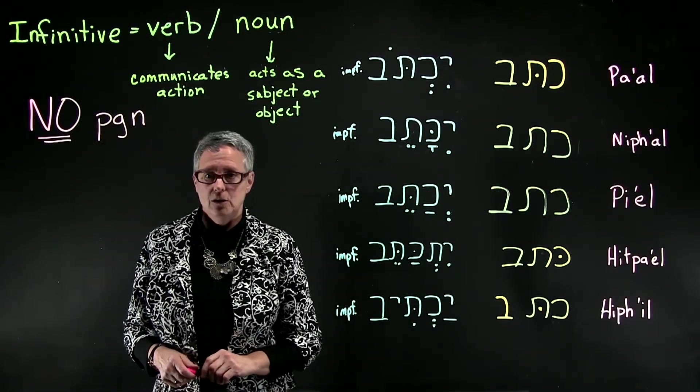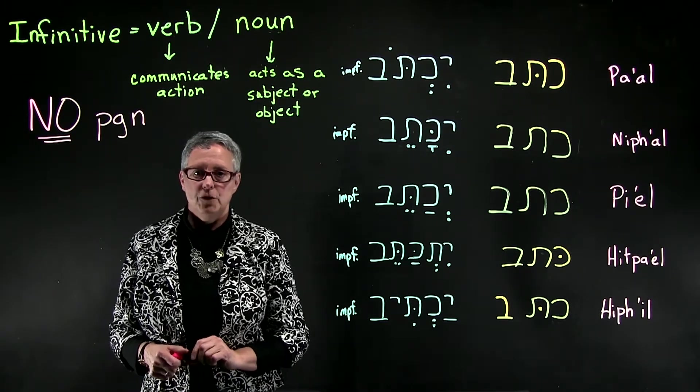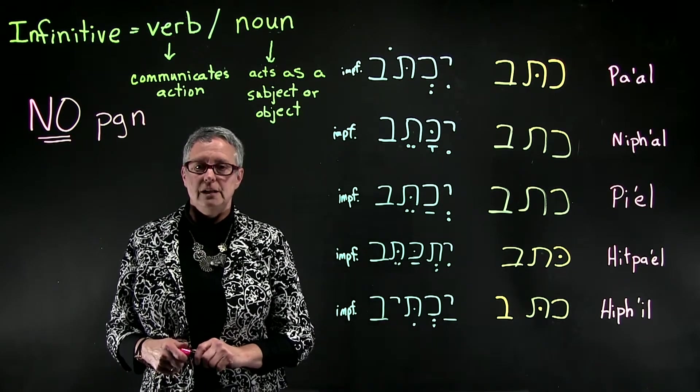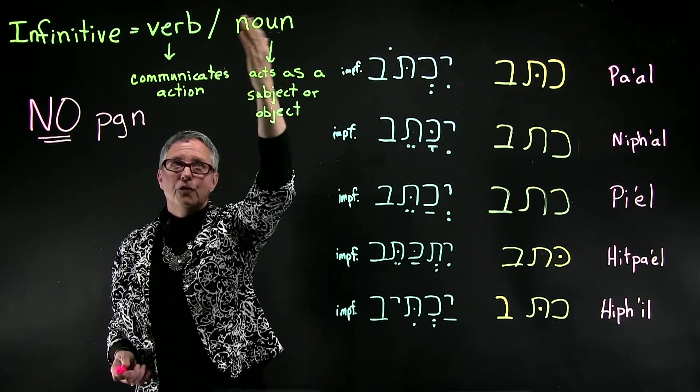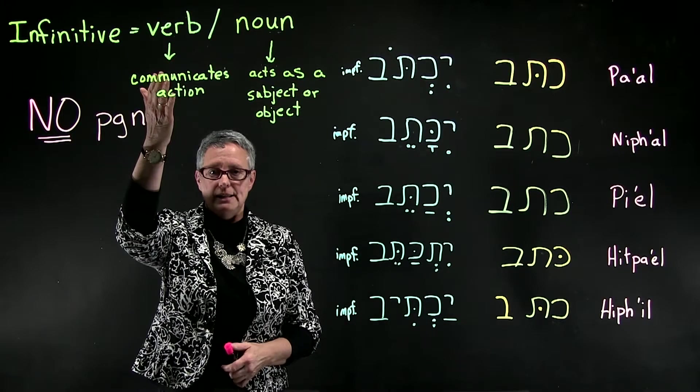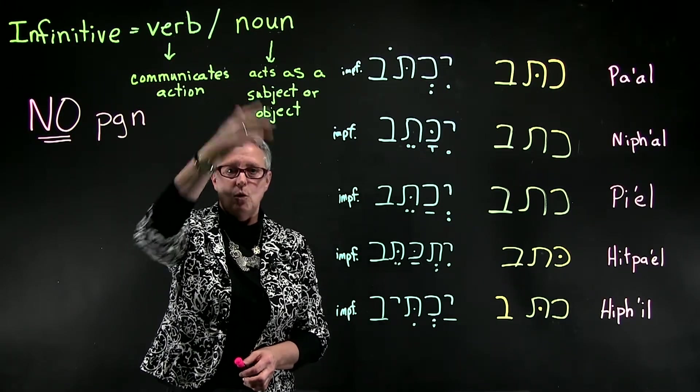This video is about the infinitive verb stems. As you may remember, an infinitive is a verb and a noun, or a verbal noun. As a verb, it communicates action, and as a noun, it acts as a subject or an object.